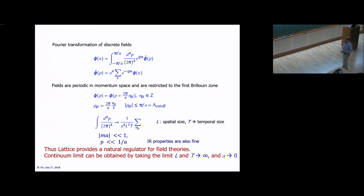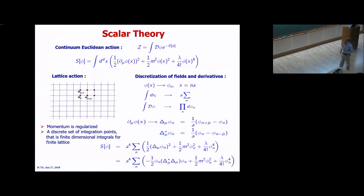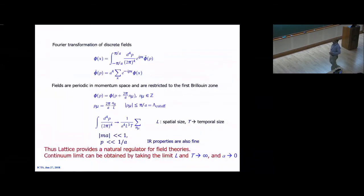The conclusion is that the lattice can provide a natural regulator for field theories. At the end, we have to take the continuum limit — the total L and T should go to infinity (thermodynamic limit) and lattice spacing also goes to zero. In that limit you get back the scalar theory. I encourage students to formulate this themselves during this workshop.